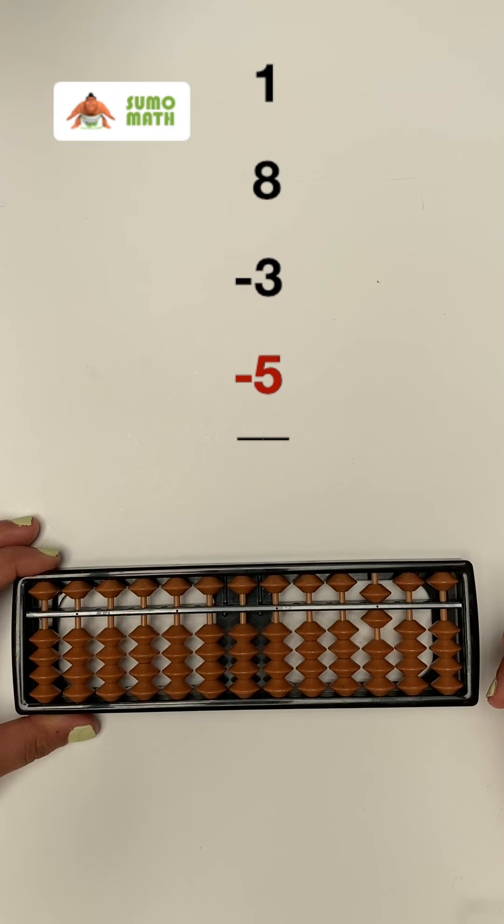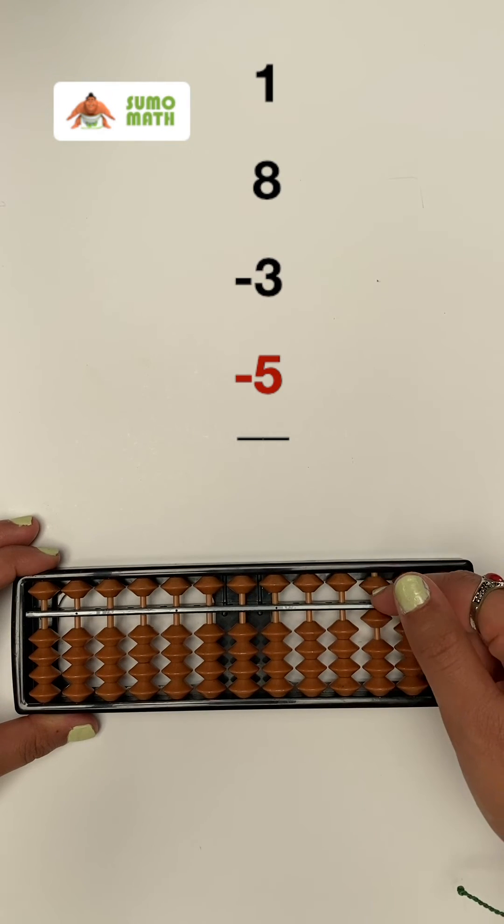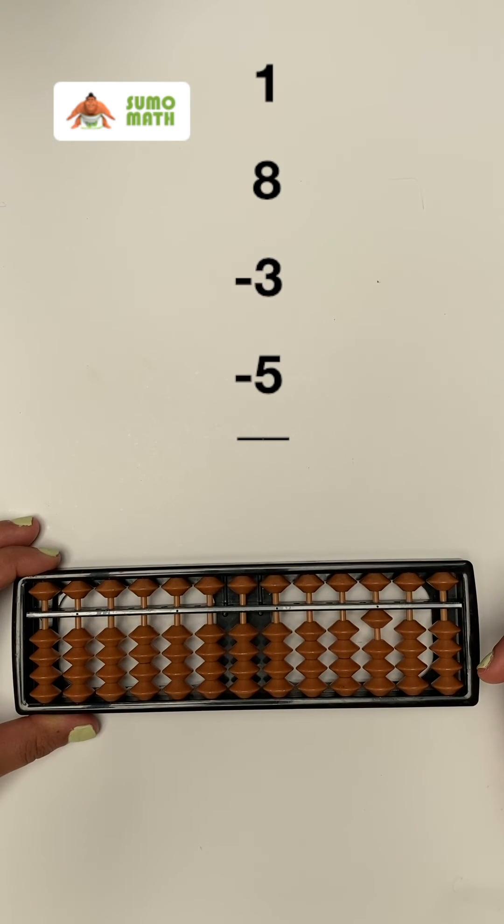Finally, subtract five by moving the top five bead away from the bar with your index finger for an answer of one on the abacus.